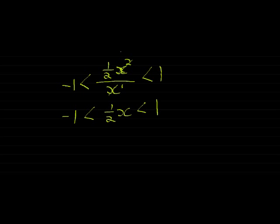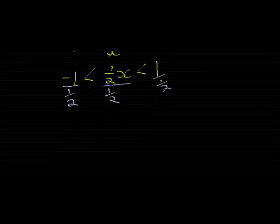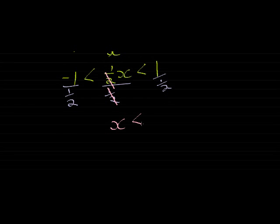So to get my x on its own we divide all three sides with a half. Keep in mind if there was a negative we had to change the signs. So here they cancel. So I get that x must therefore be less than 1 divided by a half. A half goes twice into 1 and negative twice into negative 1. And there we go.